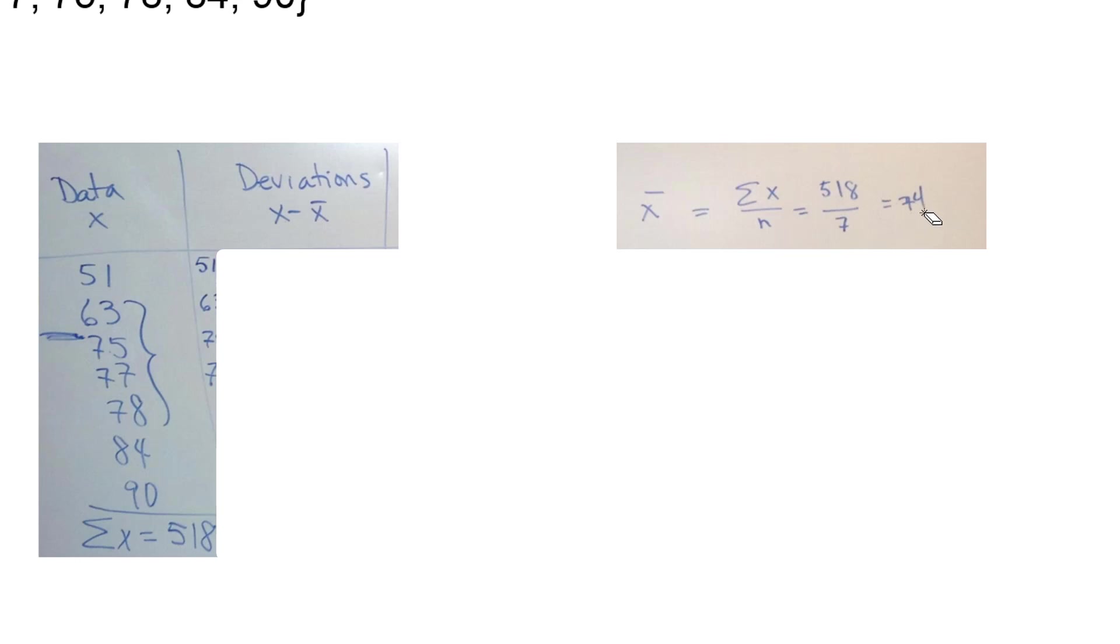So now we're going to go through and row by row we're going to subtract the data value minus the mean. The data value minus the mean. The data value minus the mean. So you should get negative 23, negative 11, 1, 3, 4, 10, and 16.